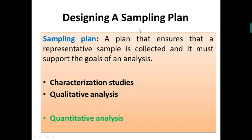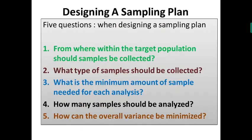For quantitative analysis especially, we must design a sampling plan. The target population may not be homogenous or it may be homogenous. While designing a sampling plan, you have to pose yourself five important questions: (1) From where within the target population should the sample be collected? (2) What type of sample should be collected? (3) What should be the minimum amount of sample? (4) How many samples have to be collected and analyzed? (5) How can the overall variance be minimized?